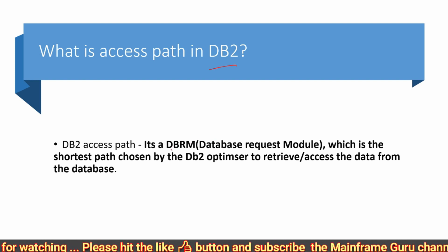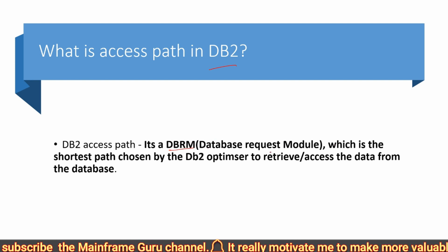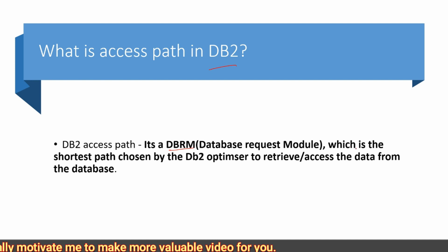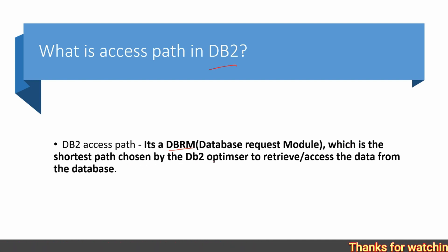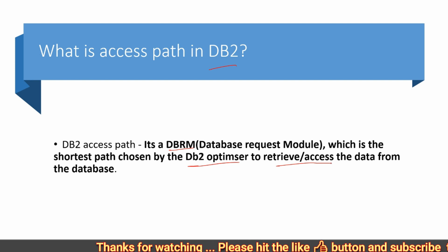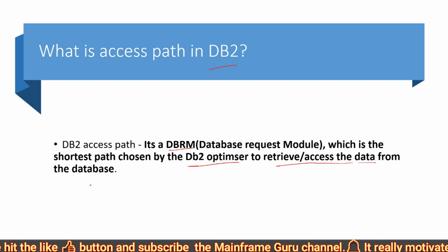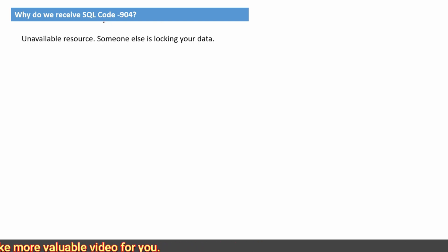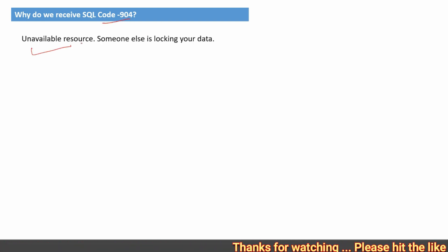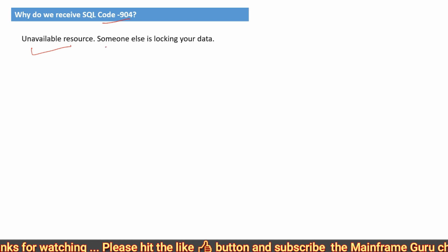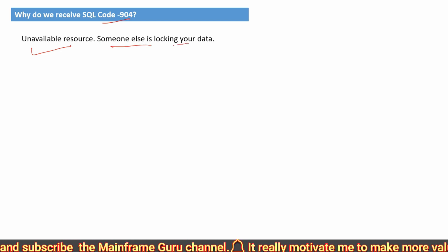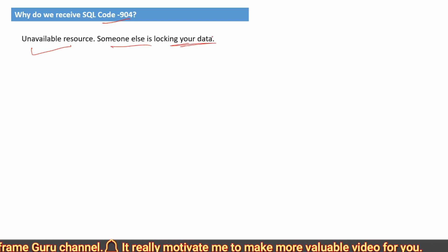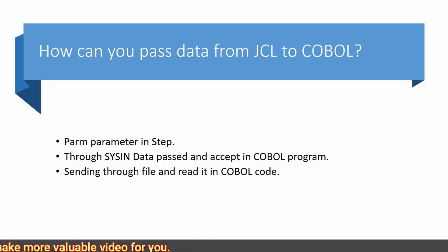What is an access path in DB2? It is a DBRM — Database Request Module — which is the shortest path chosen by the DB2 optimizer to retrieve or access data from the database. Why do we receive SQLCODE -904? It means unavailable resource — when trying to open the table, someone else is locking your data.